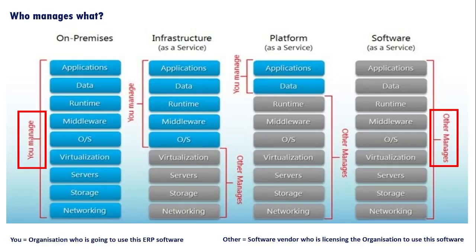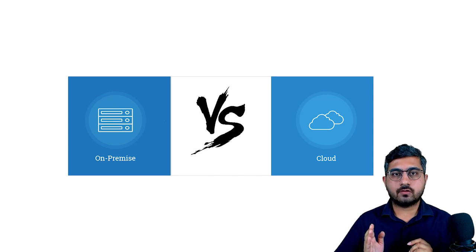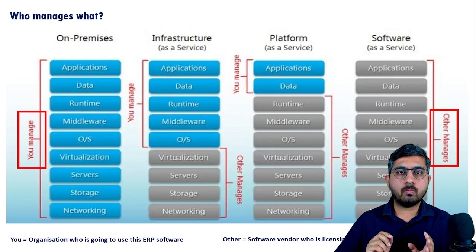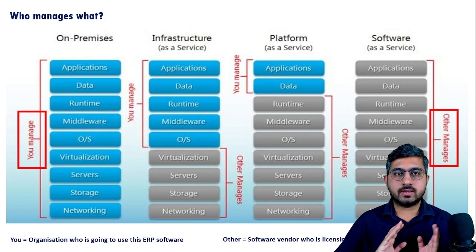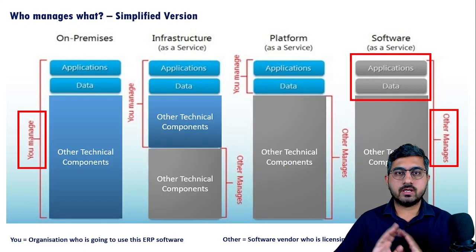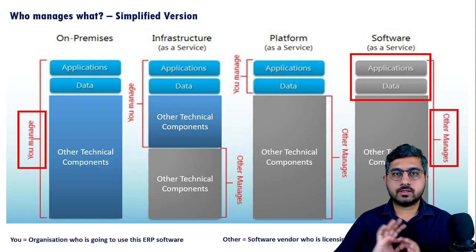For any software to work, these are all the components that are needed: application, data, runtime, middleware, operating system, virtualization, servers, storage, and networking. The differentiation between on-premise and cloud-based or SaaS-based software is based on who manages which of these technical components. For many non-technical viewers, these terminologies might seem confusing, but let's simplify it — you only need to remember application, data, and let's call everything else 'all other technical components.'